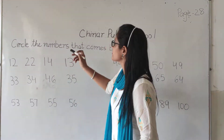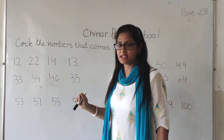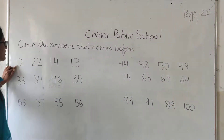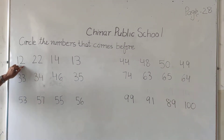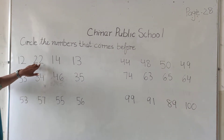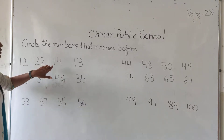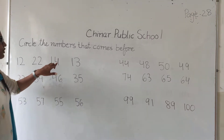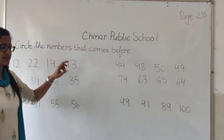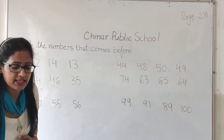You have to circle the number. Here is one, two — twelve. Two, two — twenty-two. One, four — fourteen. One, three — thirteen.